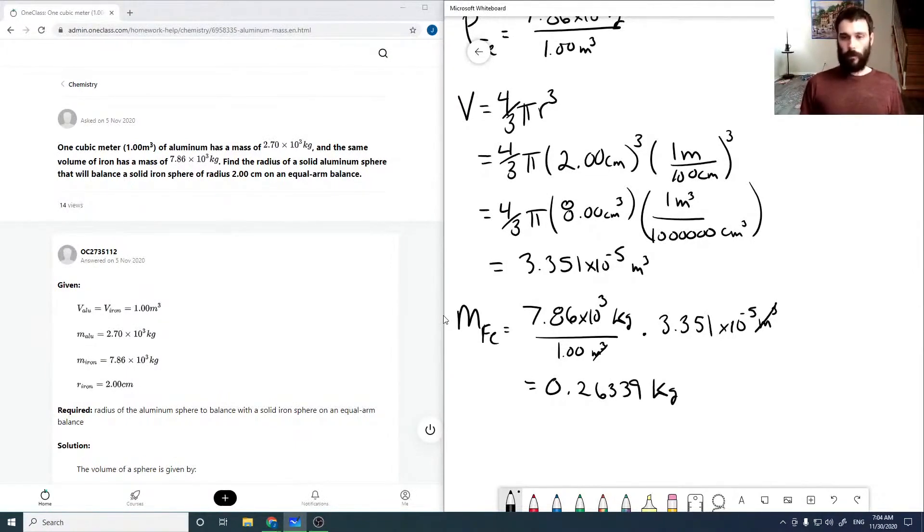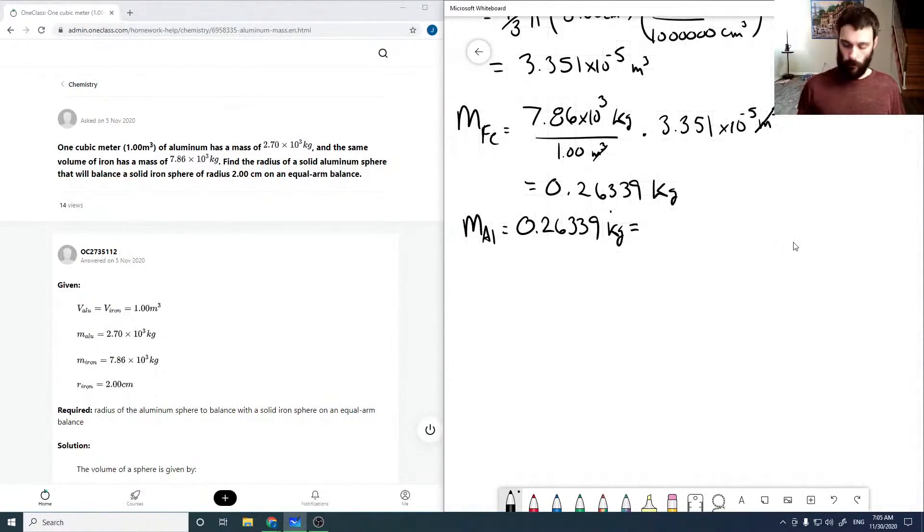Now this must equal our aluminum mass for it to balance. So then our mass of aluminum is also this number. And we can get our volume by using our density factor again.